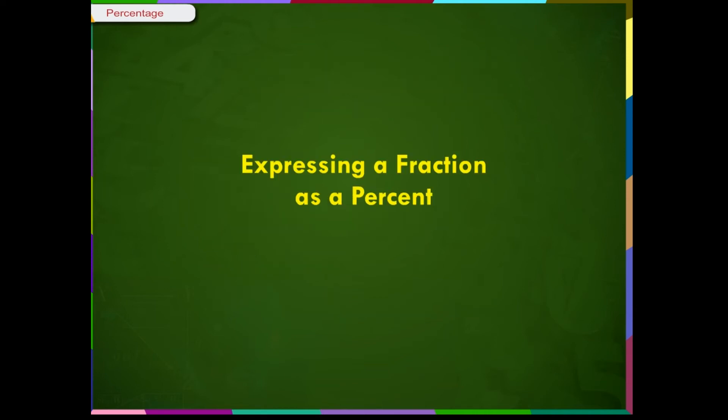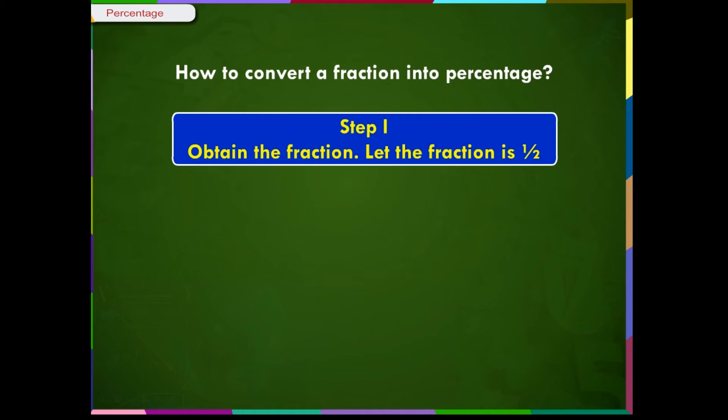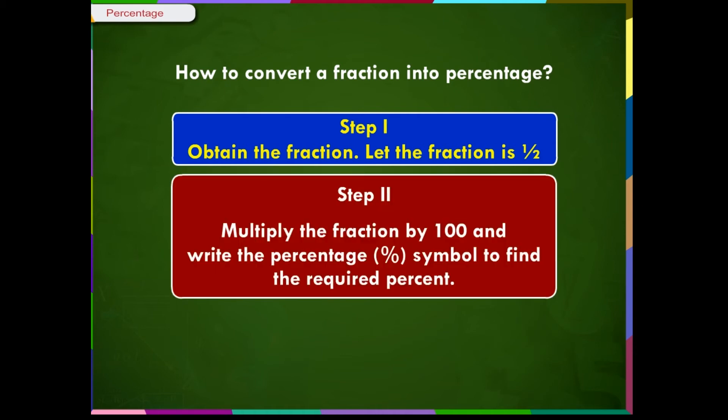Expressing a fraction as a percent. How to convert a fraction into percentage? Step 1: Obtain the fraction. For example, 1/2. Step 2: Multiply the fraction by 100 and write the percentage symbol to find the required percent. Therefore, 1/2 = 1/2 × 100% = 50%.